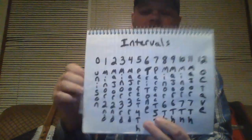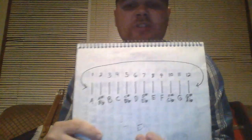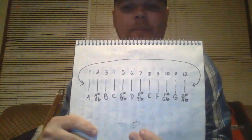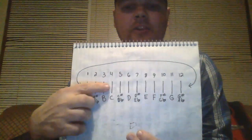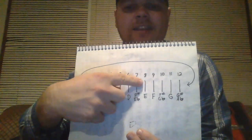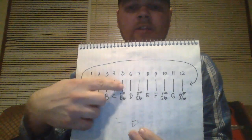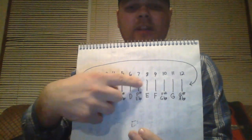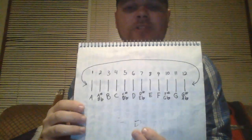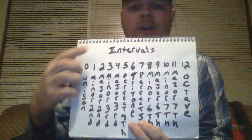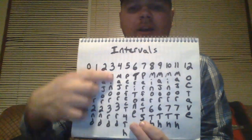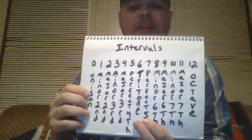As an example, using the musical alphabet, the notes C and E are one, two, three, four notes apart from each other. So that's called a major third interval.